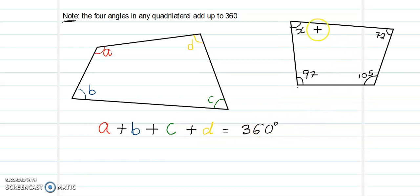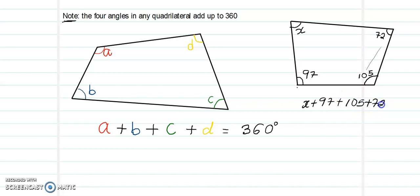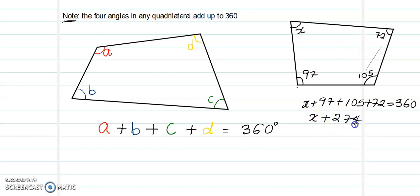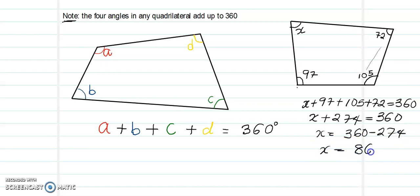So if we are asked to find the missing angle, say x, in this quadrilateral, we know that x plus 97 plus 105 plus 72 must be equal to 360. Summing those known angles: 105 and 72 and 97 gives us 274. So we have x plus 274 is equal to 360. Subtracting from both sides we have 360 minus 274, so x equals 86 degrees.